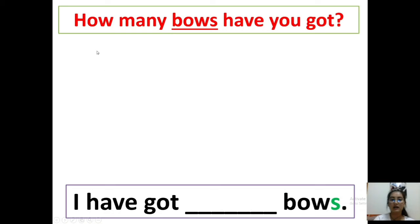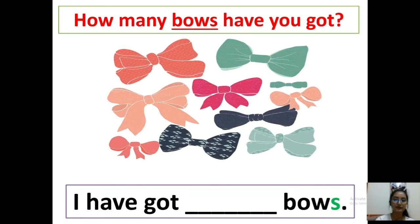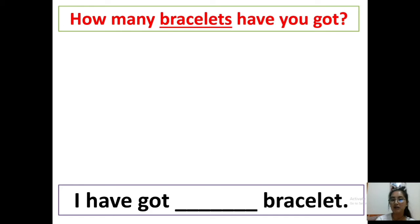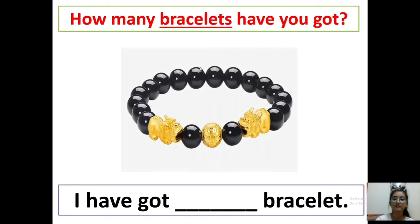Question: how many bows have you got? How many bows are there? Please count — we have one, two, three, four, five, six, seven, eight, nine, ten. Answer: I have got ten bows — with S, because there are ten. Next: how many bracelets have you got? Answer: I have got one bracelet — only one, and no S.